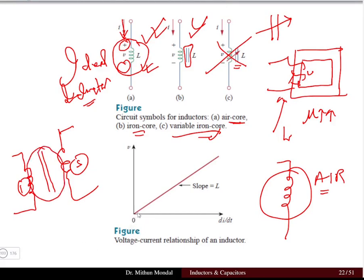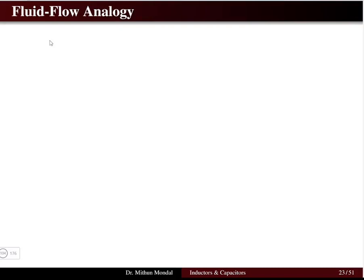If we draw a graph between voltage on the Y-axis and the rate of change of current di/dt on the X-axis, we get a slope that is basically the inductance — a straight line, uniform and linear. This is the voltage-current relationship of an inductor.